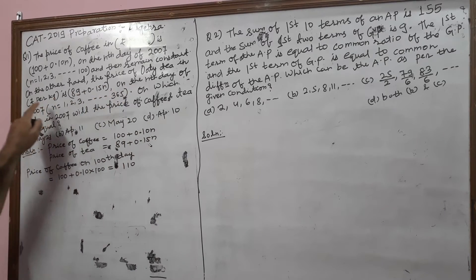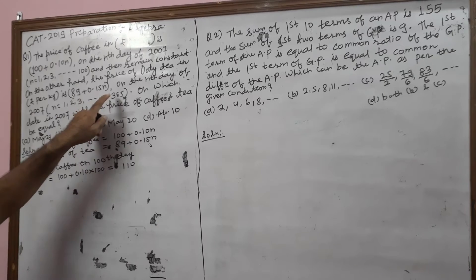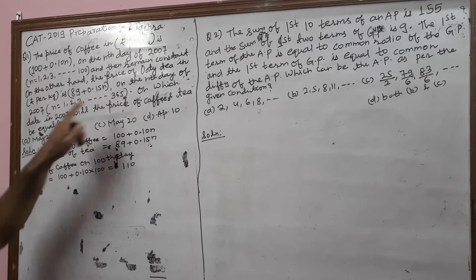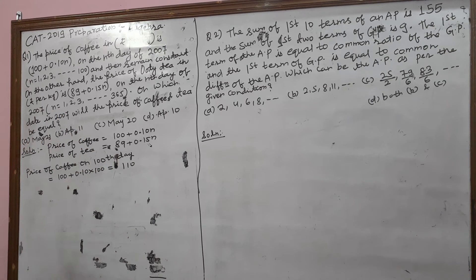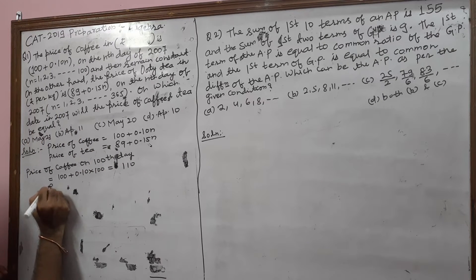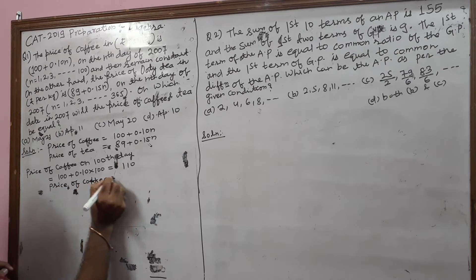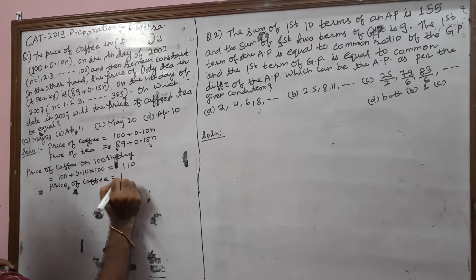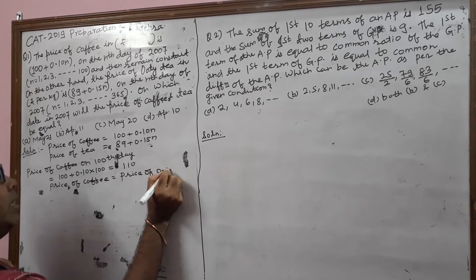The price of tea per kg is (89 + 0.15N) on the Nth day of 2007. We need to find on which day the price of coffee equals the price of tea.